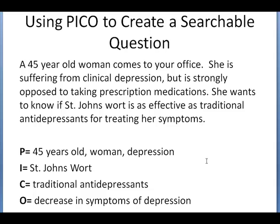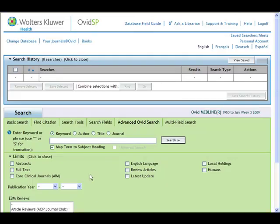We need to break our search down into concepts so that we can take advantage of subject searching in Ovid Medline. I recommend starting with the disorder or the disease first when you do your search. So we're going to go back to Ovid Medline and I'm going to start by searching for depression.